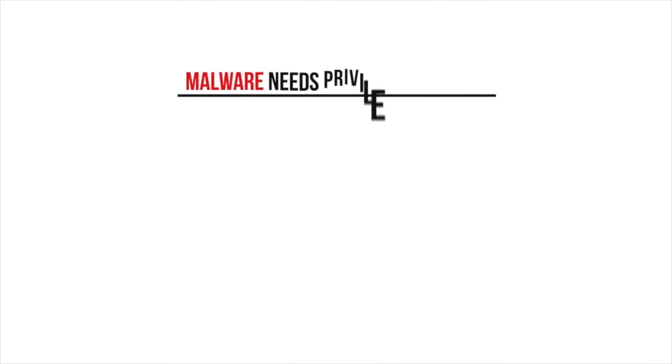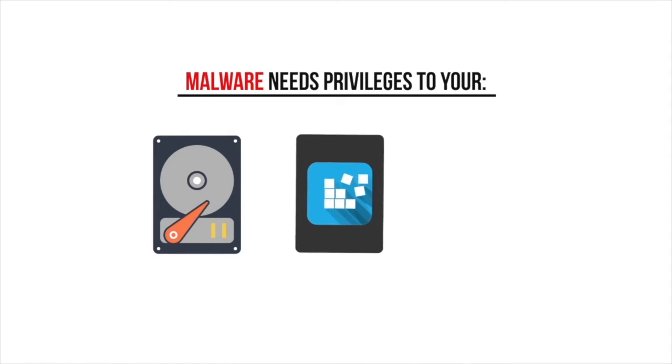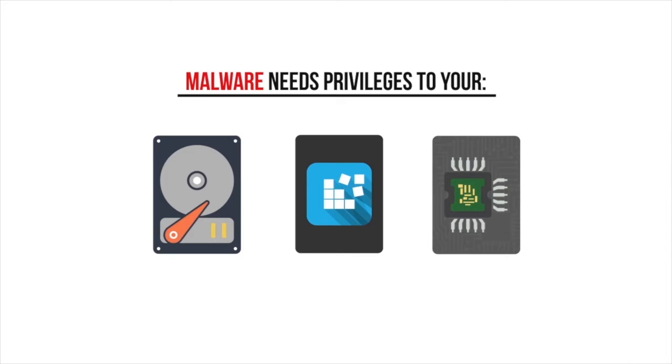So what is oxygen to malware? What does malware need to survive? How does ransomware infect your computer? Malware needs three things in the main: it needs write privilege to your hard drive, write privilege to your registry, and write privilege to your COM interface. These are the main areas where malware needs to survive, infect, and cause damage.